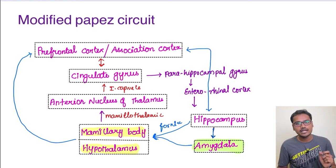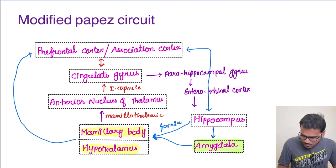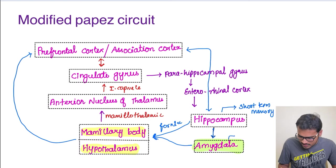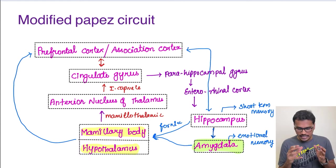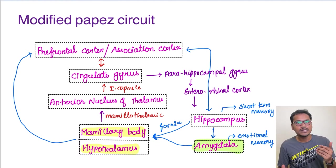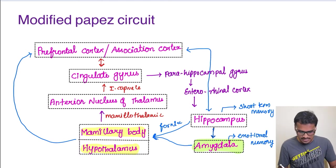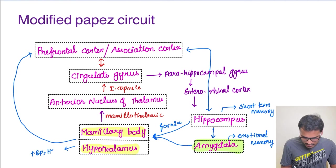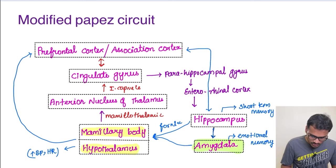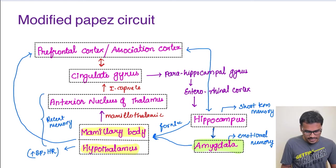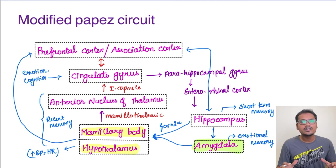Now we need to understand the functions of all these structures — how they control emotions and behavioral memories. The hippocampus is mostly involved in short-term memory, whereas the amygdala is involved mostly in emotional memory. Coming to the hypothalamus: whenever there is an emotion, there has to be some bodily reaction — for example, when we feel sad or angry, blood pressure and heart rate increase. The hippocampus and amygdala cannot increase heart rate and BP, but the hypothalamus can, as it is the head ganglion of the autonomic nervous system. The anterior nucleus of the thalamus is also involved in recent memory. The cingulate gyrus is involved in emotion and cognition. These are the functions of the primary circuit.